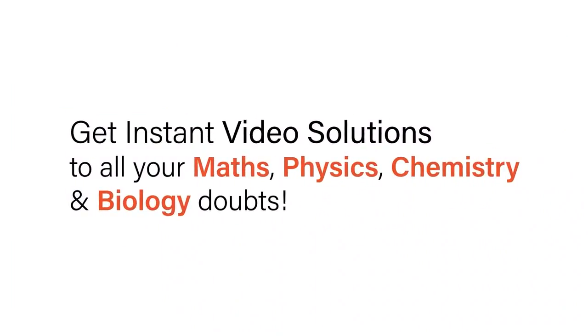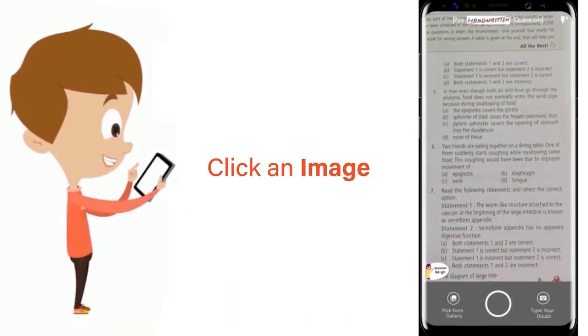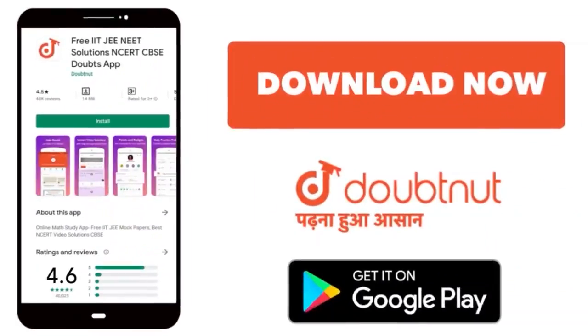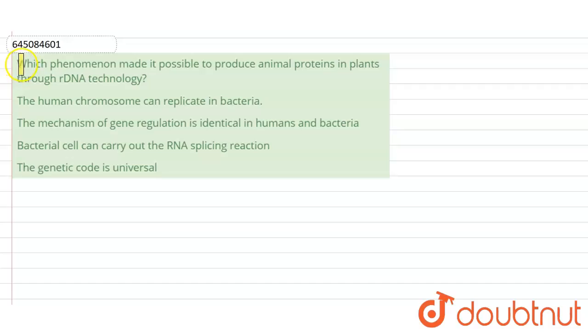With Doubtnut, get instant video solutions to all your math, physics, chemistry, and biology doubts. Just click the image of the question, crop the question, and get instant video solution. Download Doubtnut app today. Hi, the question is which phenomenon made it possible to produce animal proteins in plants through our DNA technology?